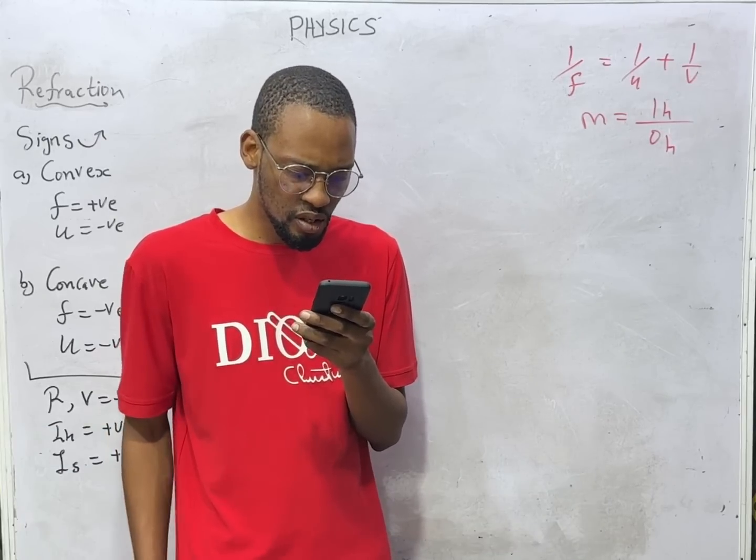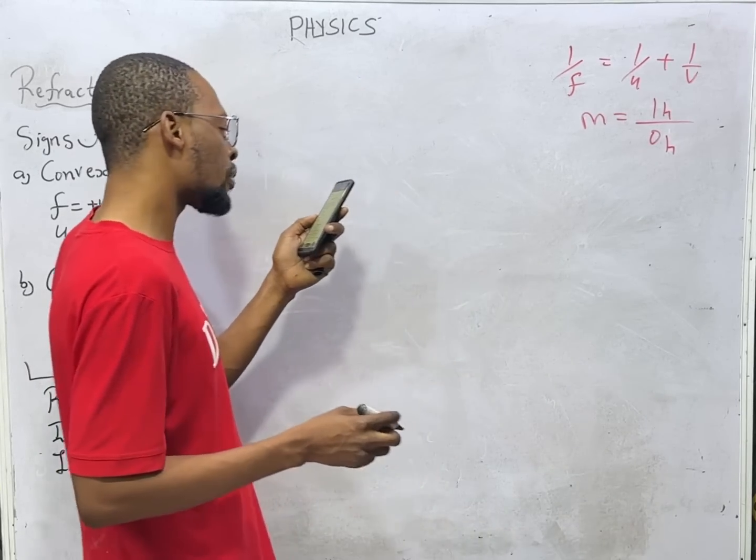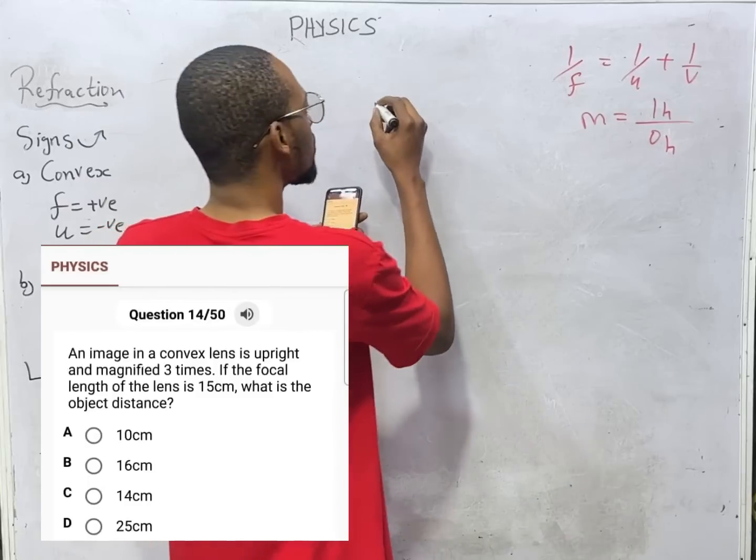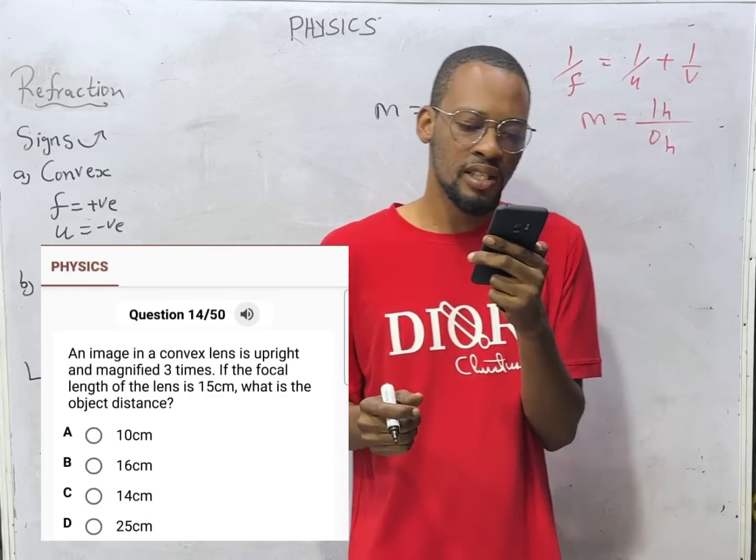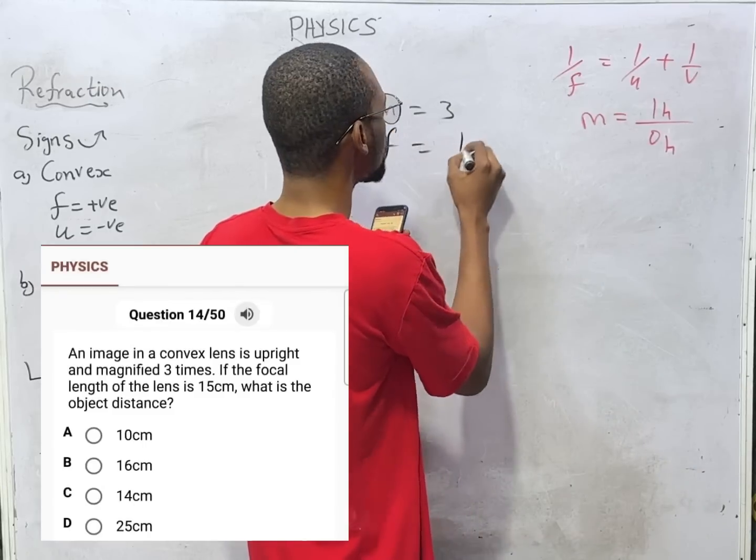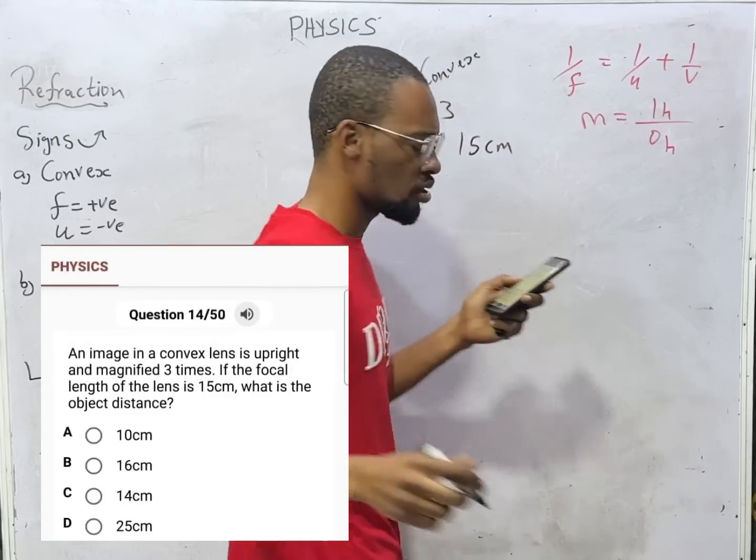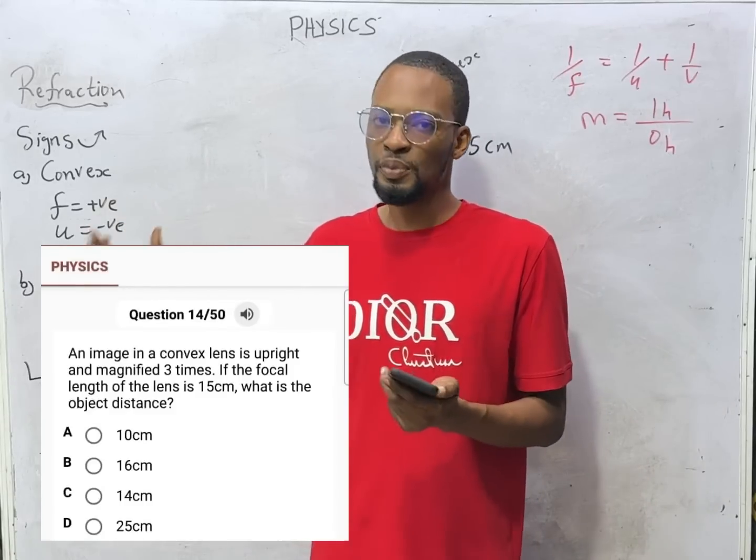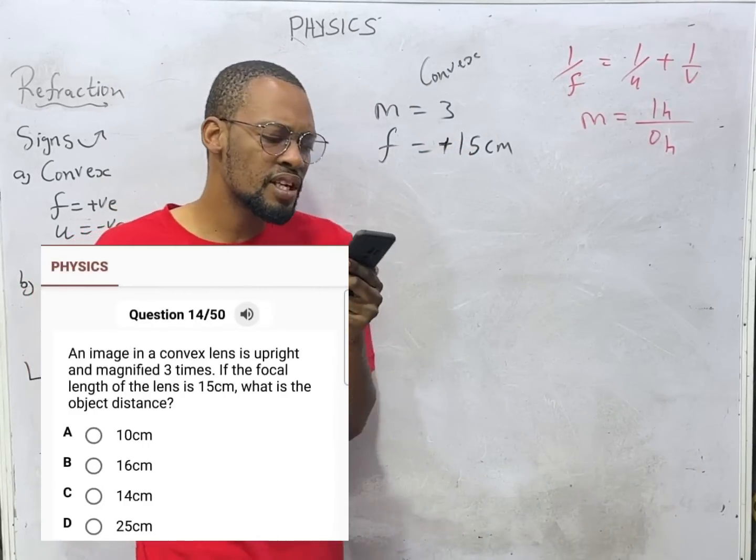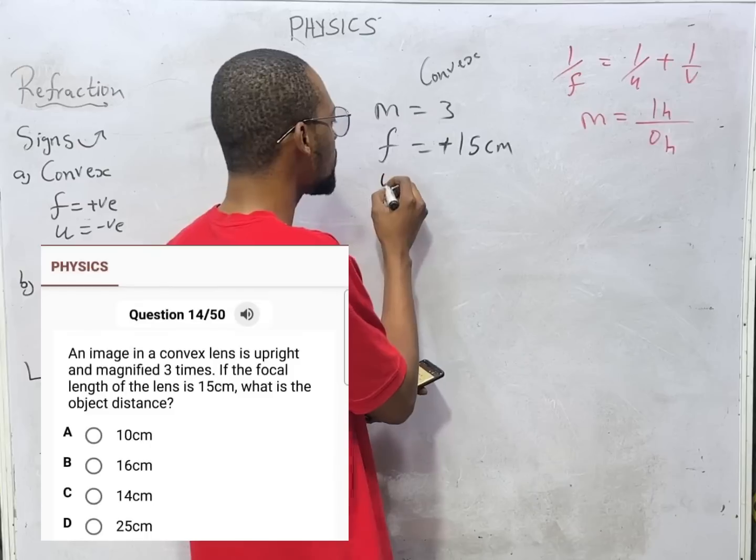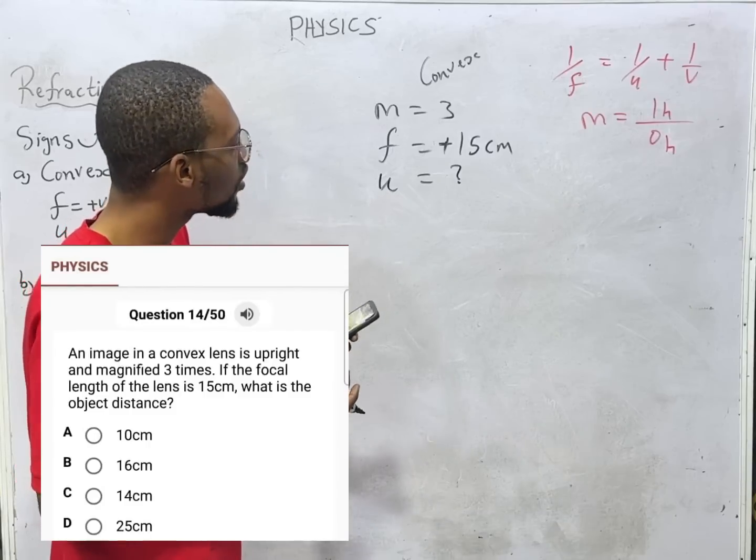An image in a convex lens is upright and magnified three times. If the focal length of the lens is 15 centimeter, we are dealing with convex lens and I told you that for a convex lens focal length is positive. What is object distance?